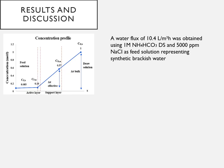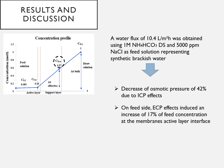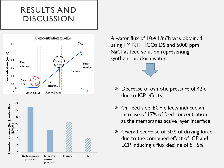Experiments have shown a water flux of 10.4 liters per square meter per hour. As shown on the concentration profile, due to ICP effects, the draw solution concentration has dropped, inducing a reduction of osmotic pressure gradient of 42 percent. On the feed side, the ECP effects induce an increase of 70 percent of the feed solution concentration. An overall decrease of 50 percent of driving force has been observed due to the combined effects of ICP and ECP, inducing a water flux decline of more than 51 percent.